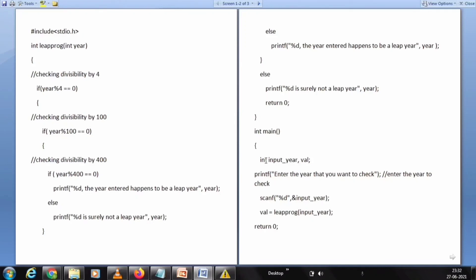Then the main function: int input_year and value. Printf 'enter the year that you want to check'. Enter the year to check, then give the year scan. Scanf percent d ampersand input_year. And value equals leapYear input_year. Return 0. This is the simple program to check whether the given year is leap year or not.